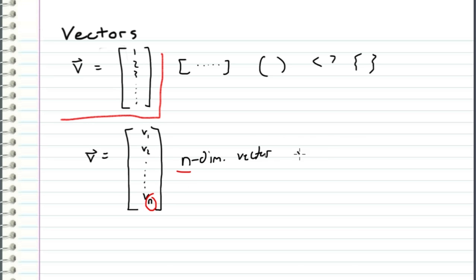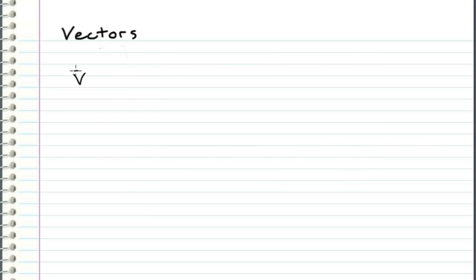If we had a vector u that was defined as 1, 2, we would say that this is a two-dimensional vector because there are 1, 2 components to this vector. So let's take a look at that vector, 1, 2, so we can understand exactly what this notation means.